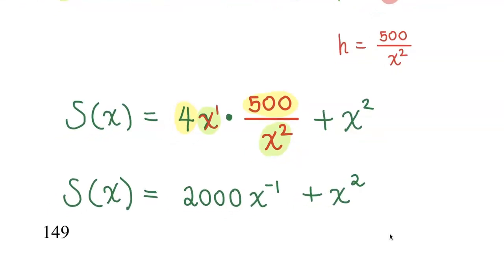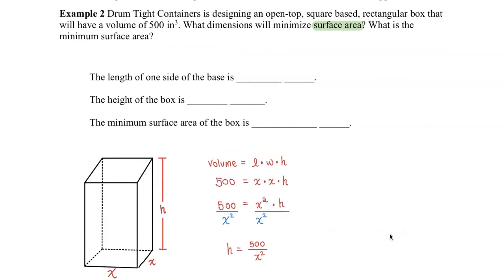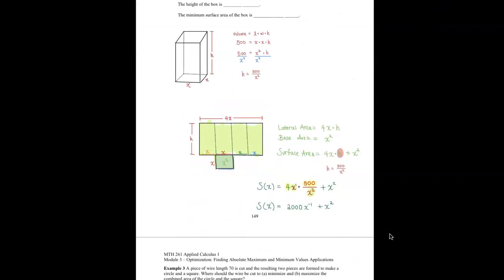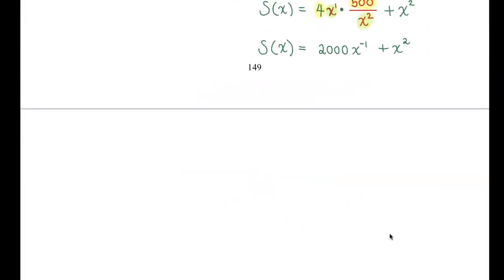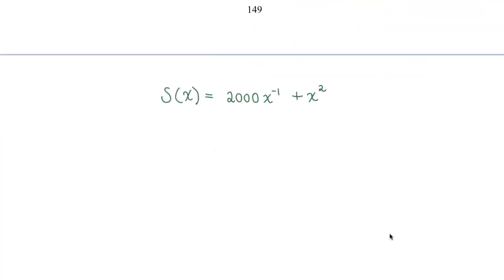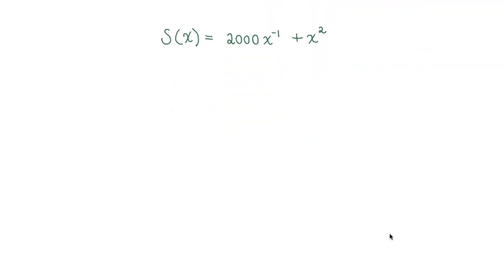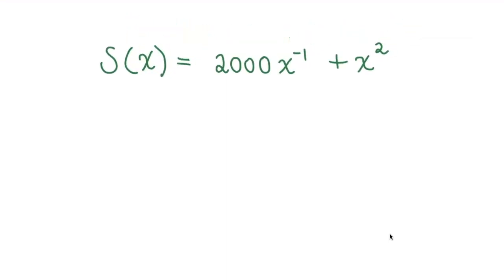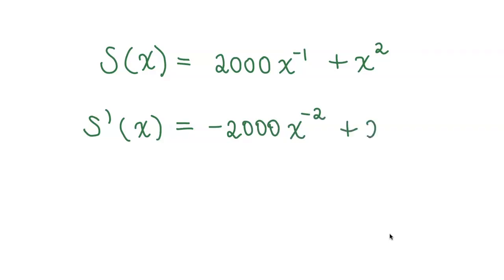We want to minimize this surface area. To find the critical value — where a minimum or maximum occurs — we take the derivative and set it equal to zero. The derivative of the surface area with respect to x is −2000x⁻² + 2x. Set this equal to zero.